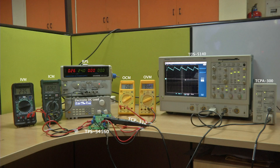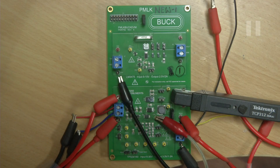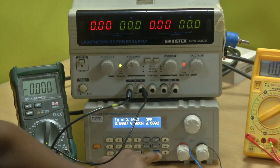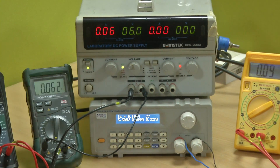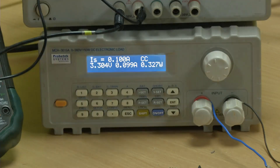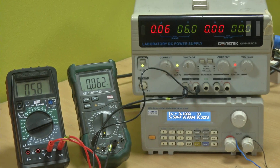Let us begin the experiment by setting the input voltage and the input power, and then let us see what actually happens at the output. We are setting the load current to 100 milliamperes. On your yellow multimeter, you should be able to measure roughly 100 milliamperes. Do not read the meters which are on top of the power supply, but read the multimeters — that is where the efficiency calculation can become easy.